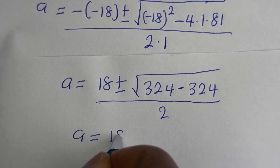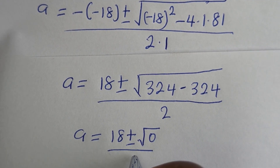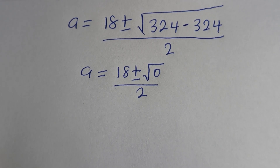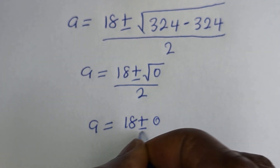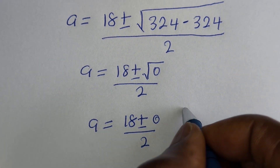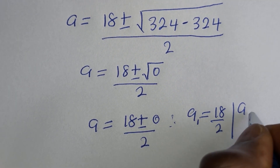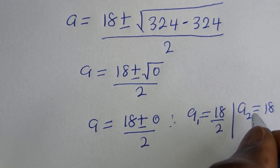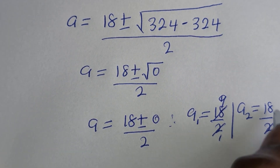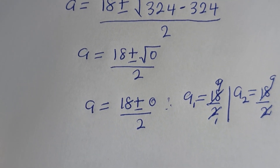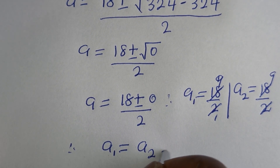A is equal to 18 plus or minus the square root of 324 minus 324, which is the square root of 0, all divided by 2. Therefore A is equal to 18 plus or minus 0, over 2. So A1 is equal to 18 over 2 and A2 is equal to 18 over 2, giving A1 equals A2 equals 9.